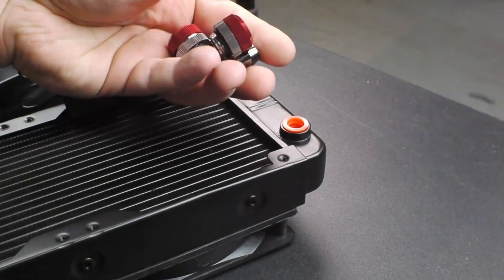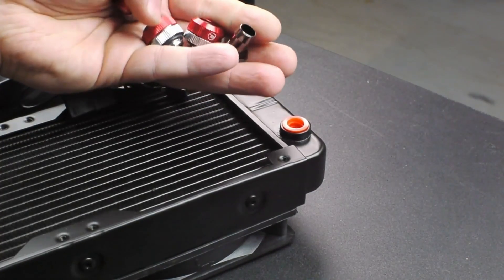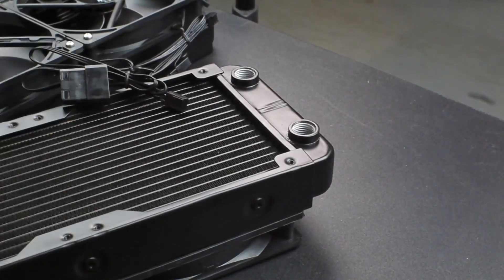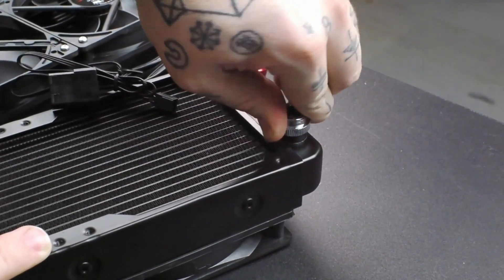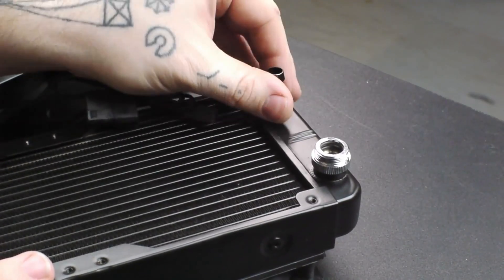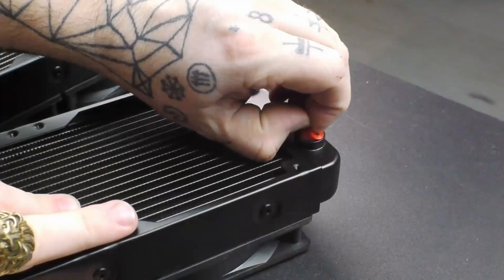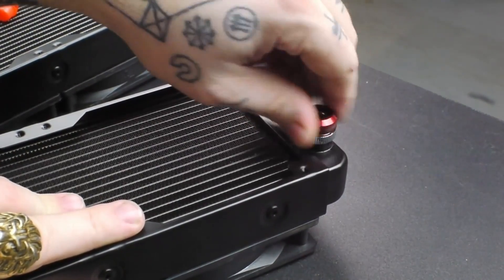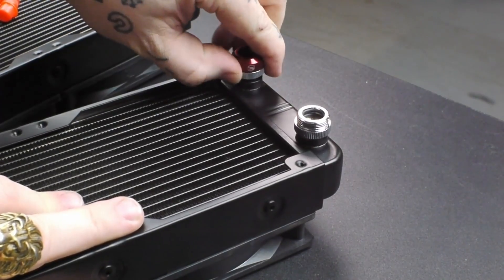The next step is to add fittings for both soft and rigid tubing. So I need to pull these plugs out of here, and then this radiator gets one compression fitting for rigid tubing, and one hose barb for soft tubing. The other radiator is just going to get two compression fittings, both for rigid tubing.